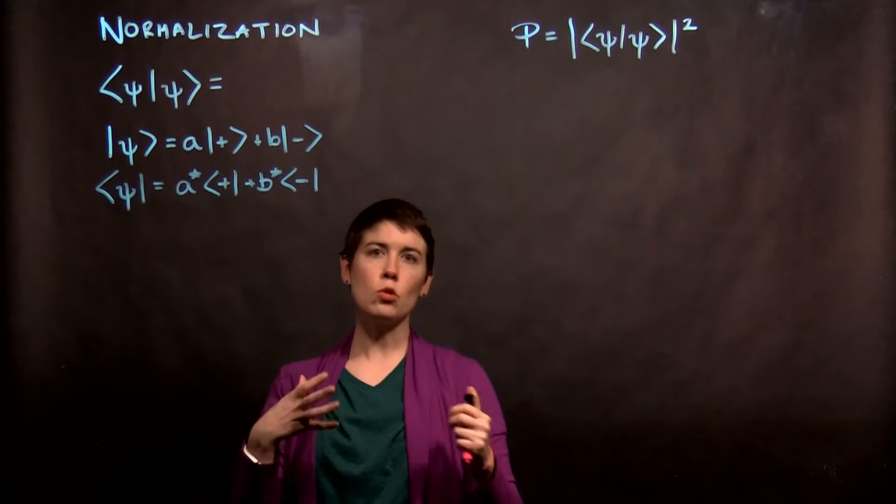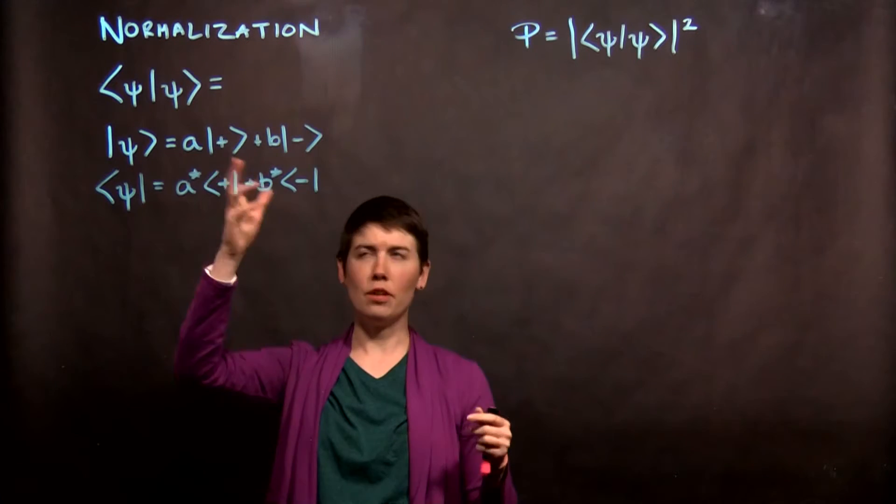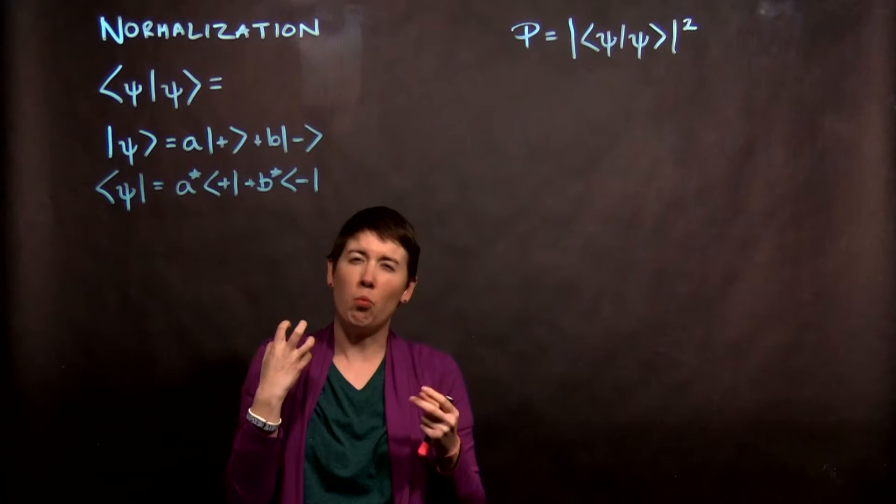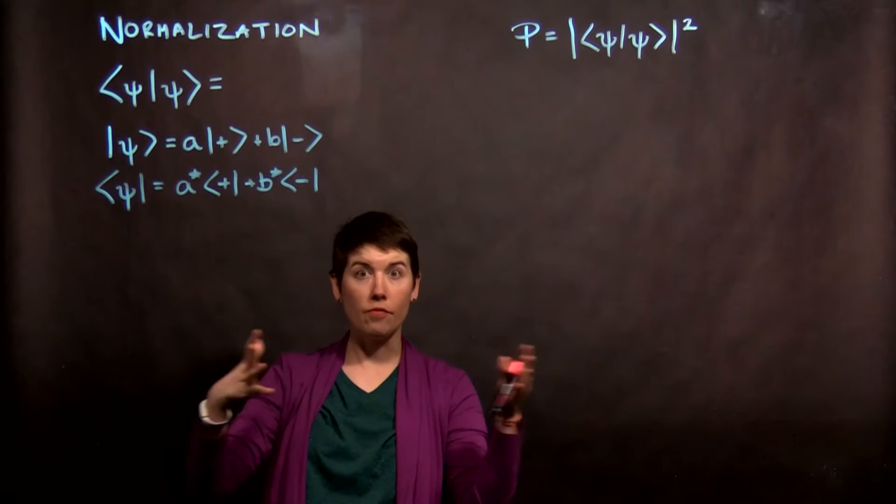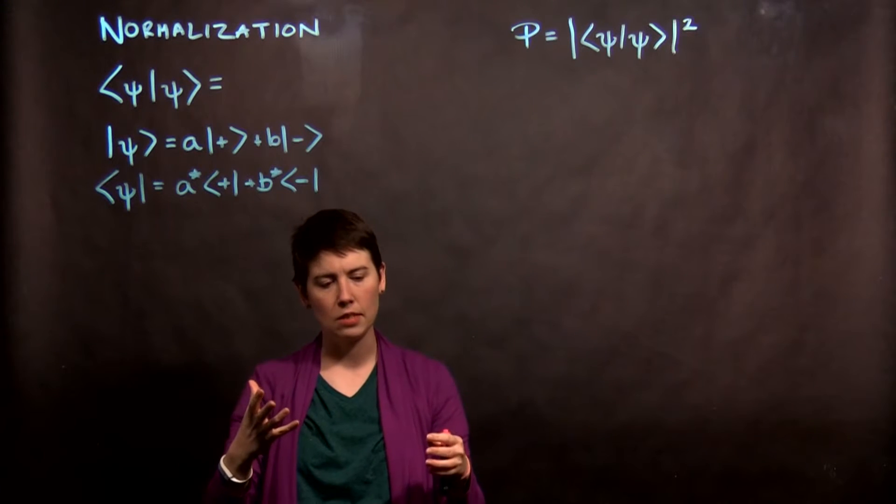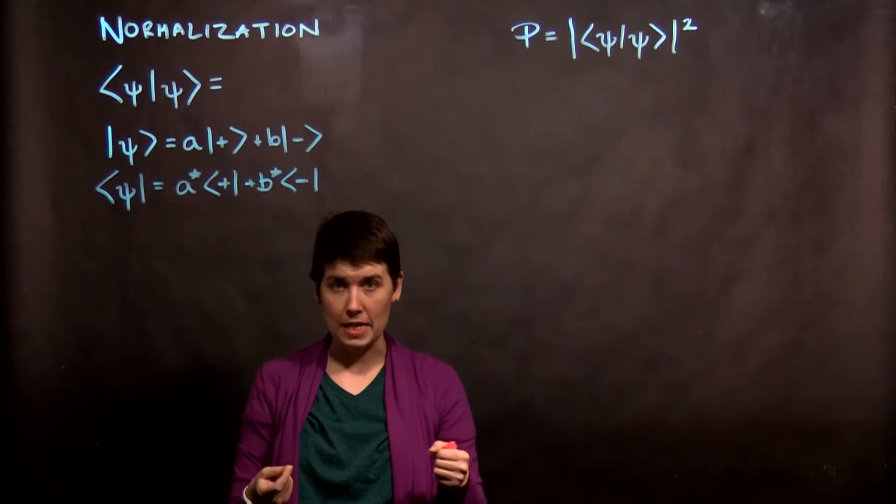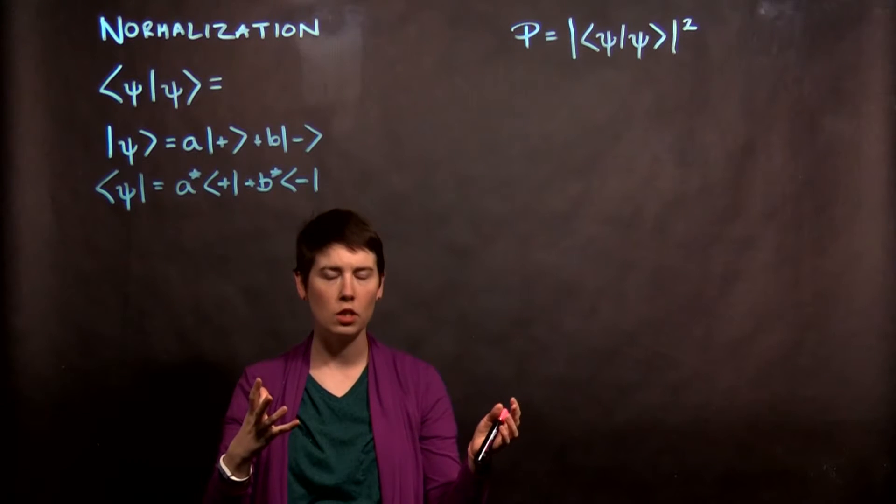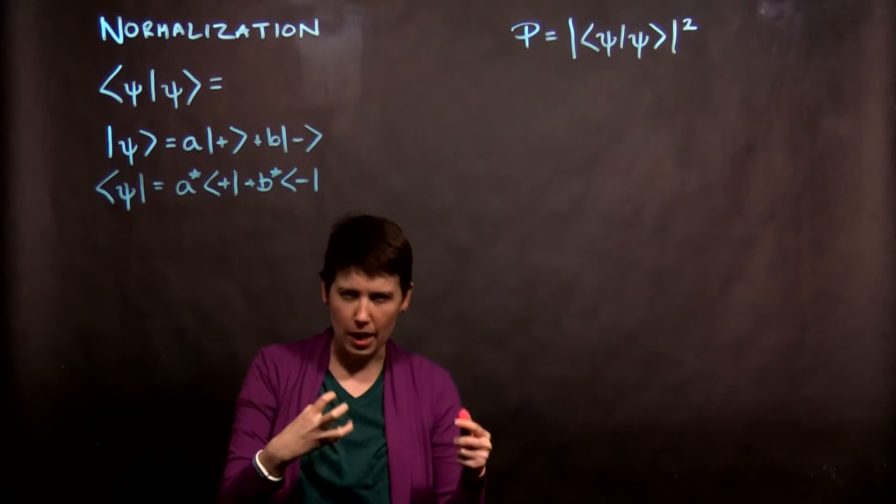The idea of normalization is that we want our vectors, in this case our vectors representing these quantum states, to have length one. The reason is that when we think about our vector space that our states exist in, the length of the vector doesn't actually have very much meaning. The direction is going to matter, and in this case it's a generalized direction, but the length itself doesn't physically matter.